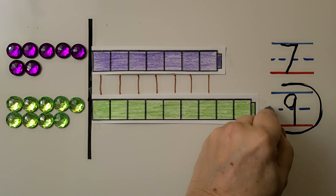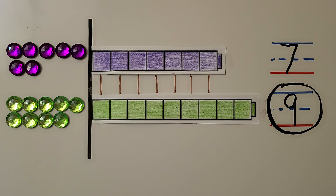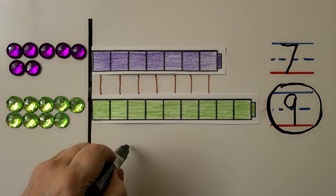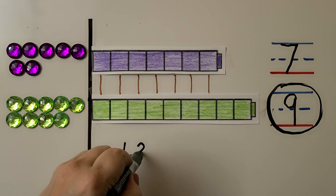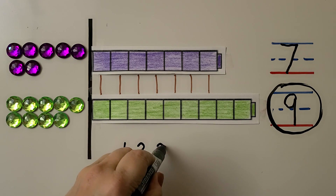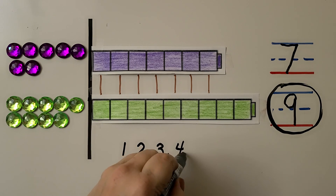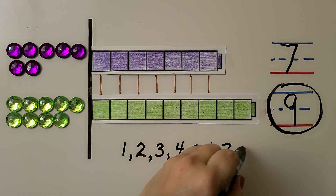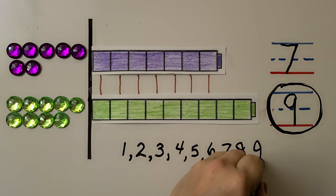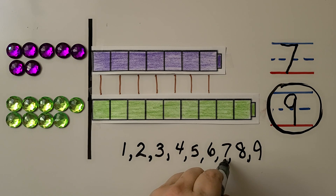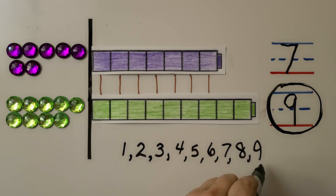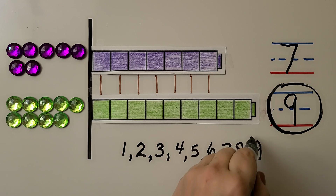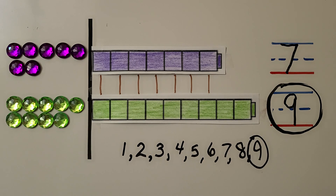Nine is greater than seven. The greater number comes after in counting order. When we write the numbers in counting order — one, two, three, four, five, six, seven, eight, nine — here's seven and here's nine. Nine comes after. So nine is greater.